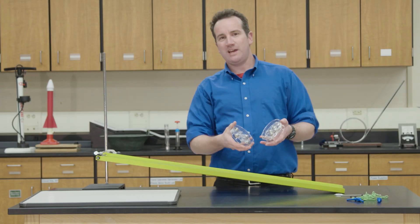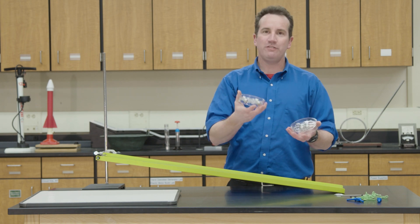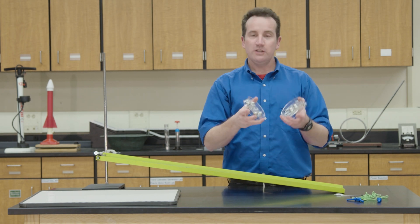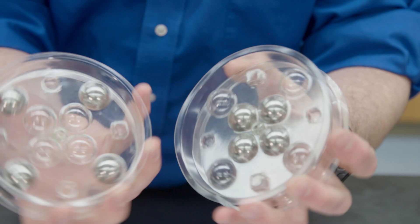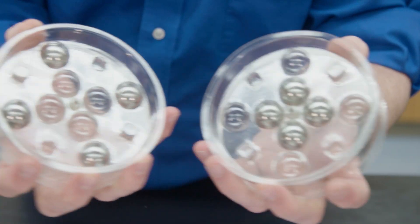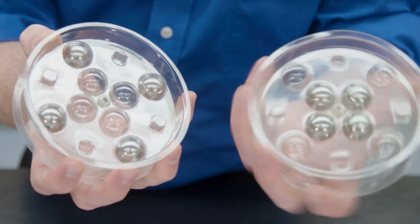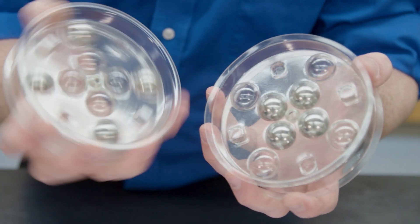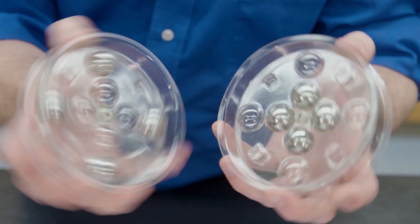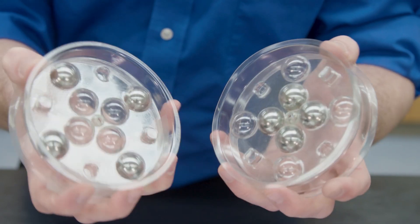But why does this happen? Well, if you hold the discs in your hand and spin them, you can immediately understand why. By spinning them at the same time, you begin to feel that the center-weighted disc is easier to spin than the outer-weighted disc. This is because it takes more work to move the one who has the masses further out.